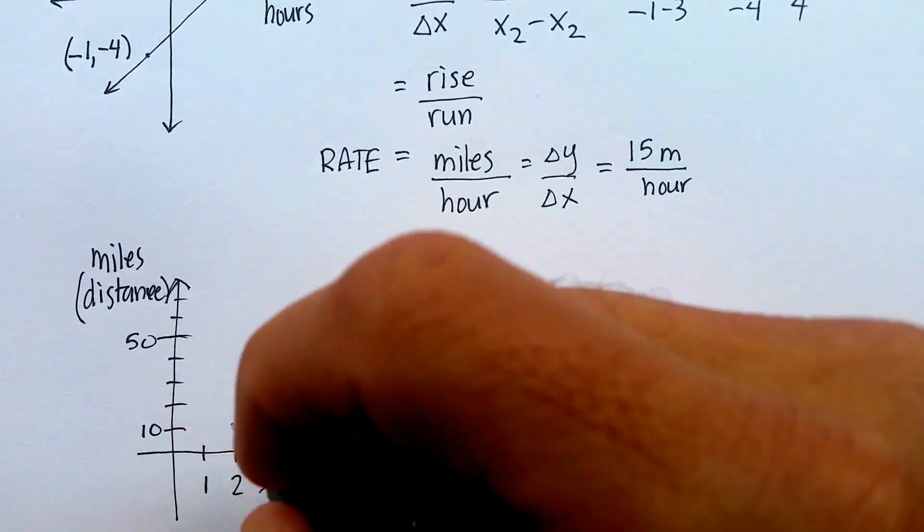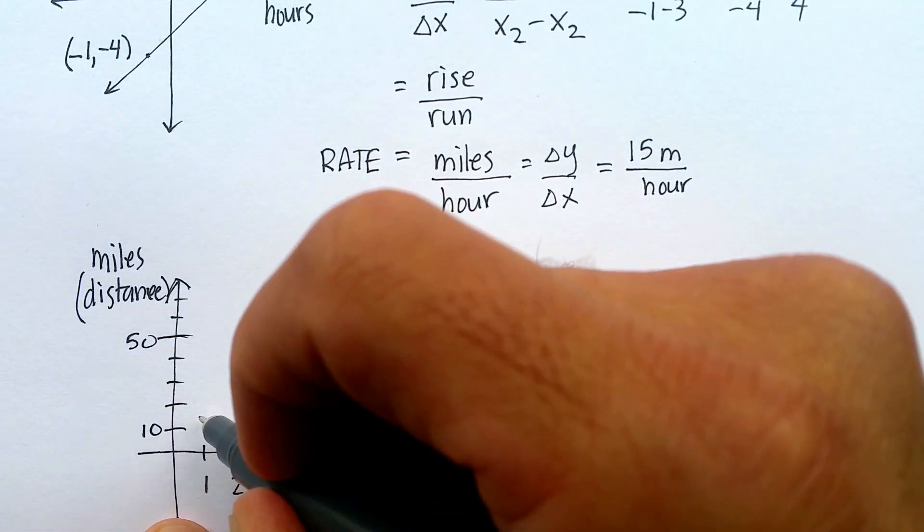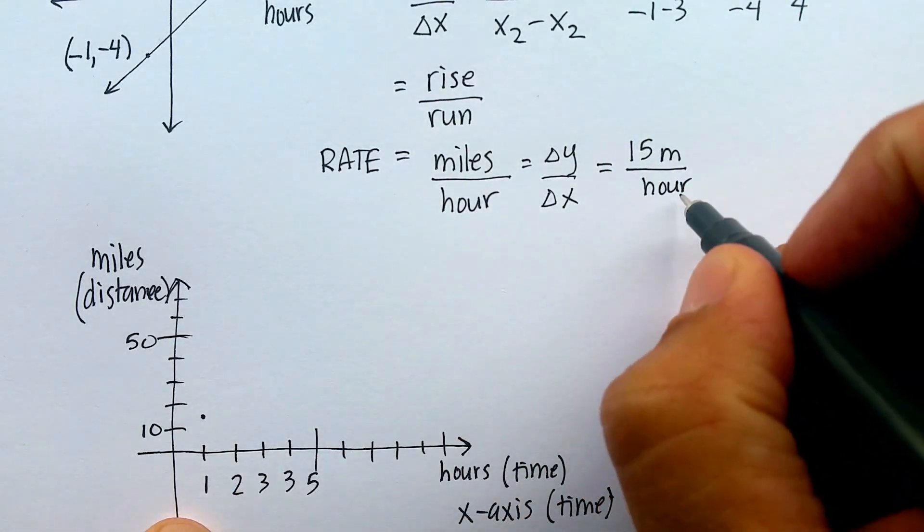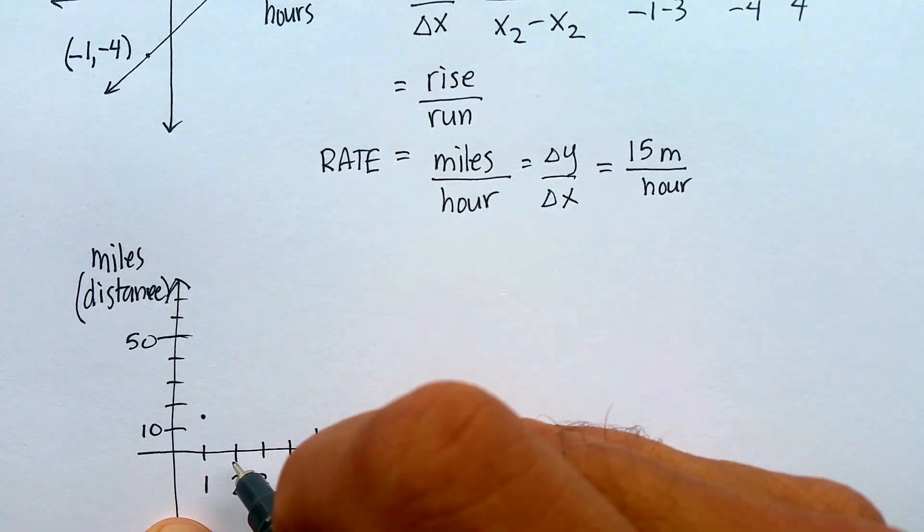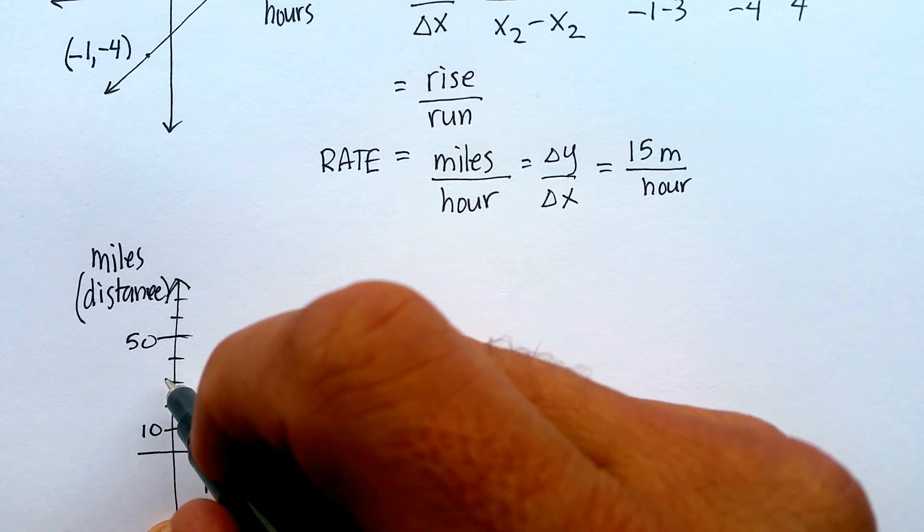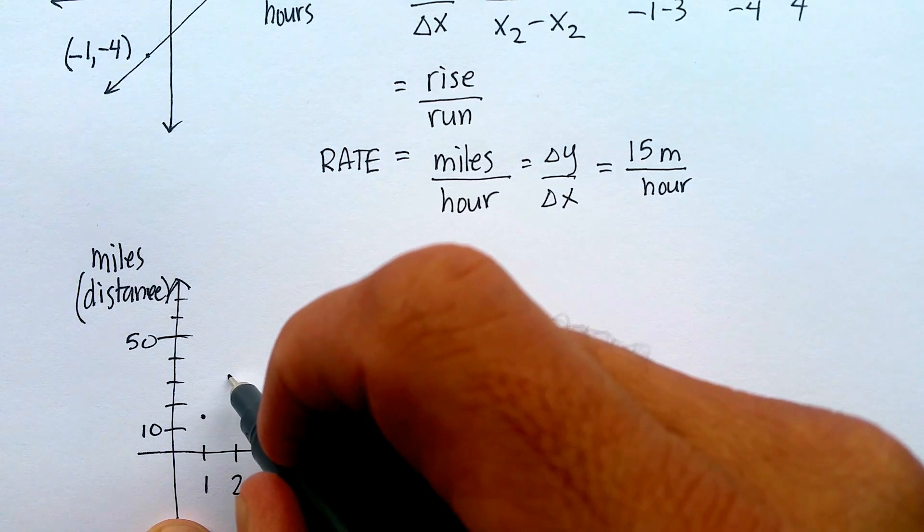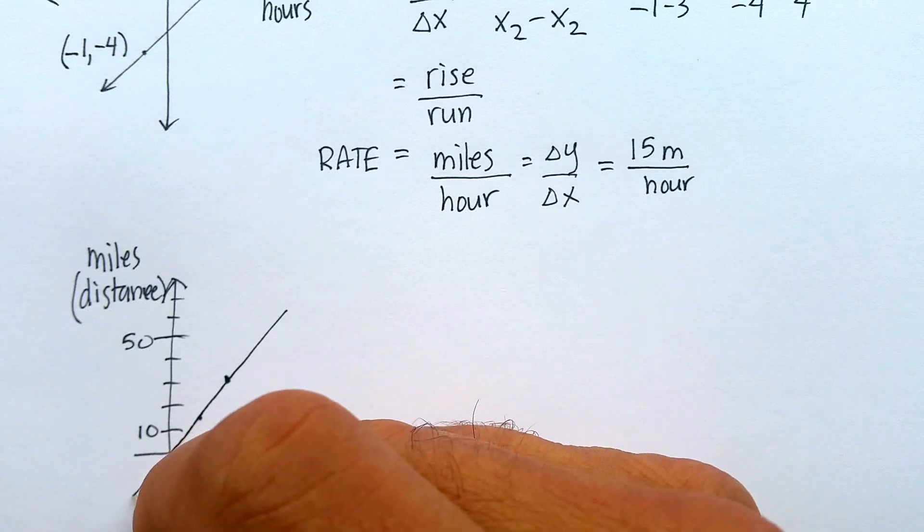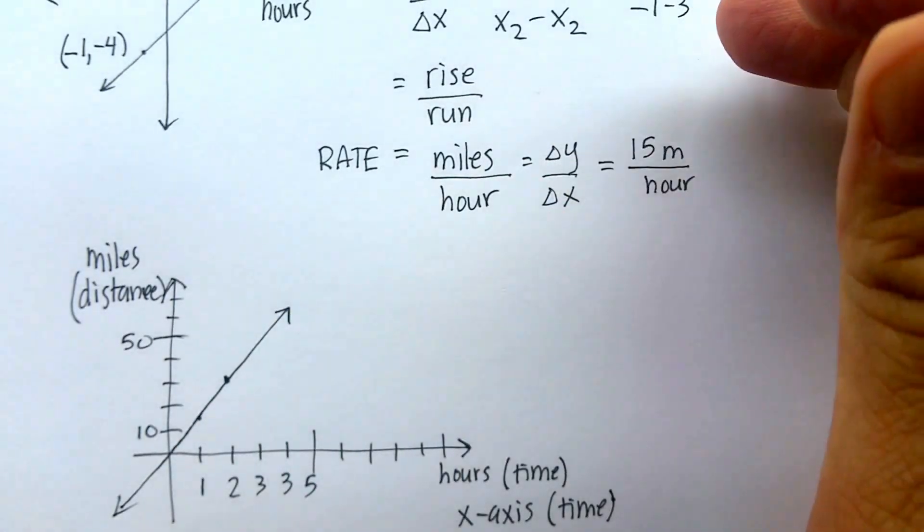And then 60, 70, et cetera. So 15 would be right about there. If I were to say in two hours, what would be my distance? And it would be two would be 30, wouldn't it? So 10, 20, 30. Once you've got two points, you can go ahead and draw your line.